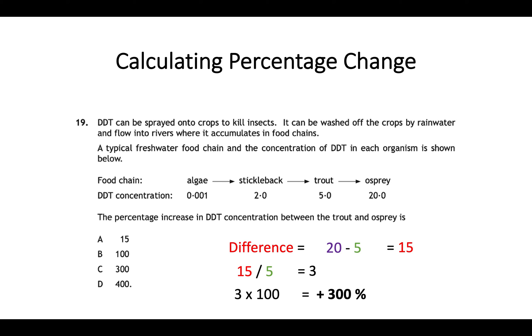We're going to divide 15 by the original value which they've given you for the trout. Remember you're ignoring algae and stickleback. It's asking for the percentage increase between the trout and the osprey. So 15 divided by 5 gives you a value of 3 and finally we multiply that 3 by 100 to give us an answer of 300% or increase of 300% which in this case would be C.